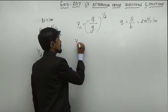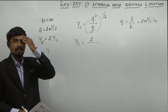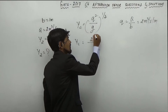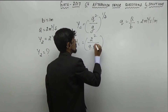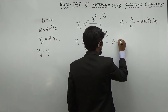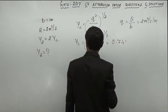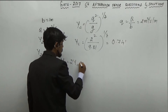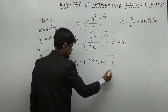So, Yc is equal to 2 squared divided by 9.81, whole raised to the power 1 by 3. Solving this, Yc comes out to be 0.741 meters. Therefore, Y2 is equal to 2 times Yc, that is equal to 1.483 meters. This is the obtained value.